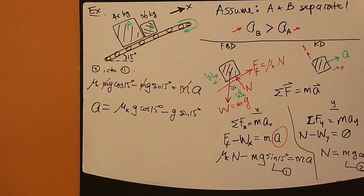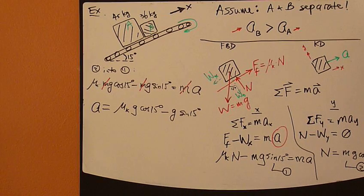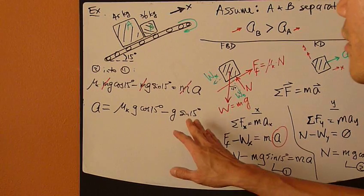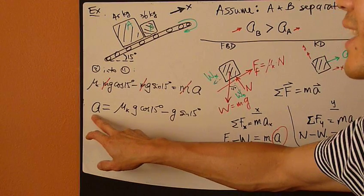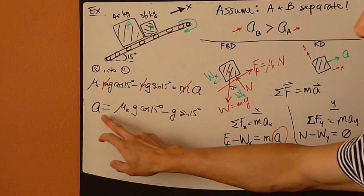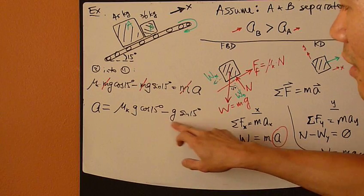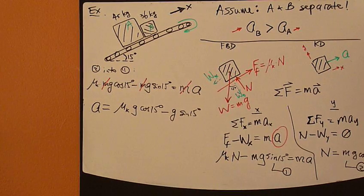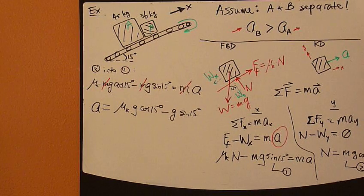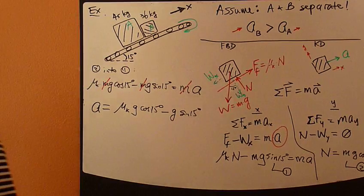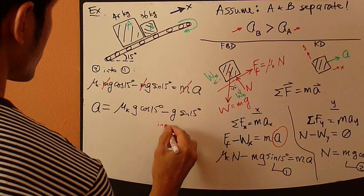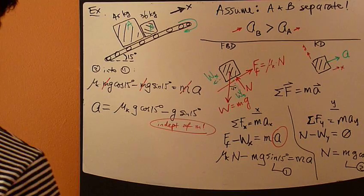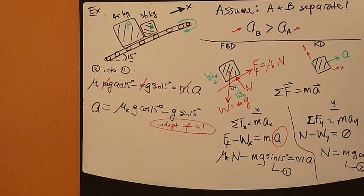Look at this equation right here. Notice anything special about this? This is the unknown, the acceleration of either particle. Now it is not a function of mass at all. The mass drops out of this equation, so it's independent of mass. Independent of mass. So that's kind of interesting.